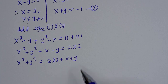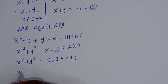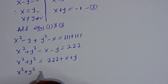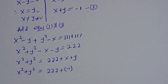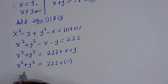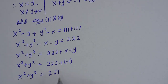But we know that x plus y is equal to negative 1. Then x squared plus y squared is equal to 222 plus negative 1, which gives x squared plus y squared equal to 221. Let's call this equation 4.